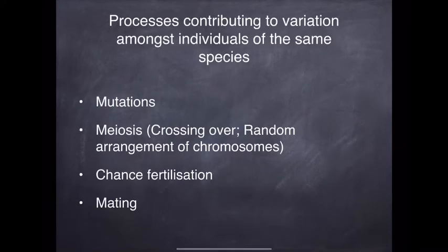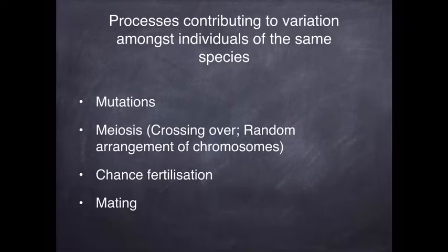If you remember when we did variation and sources of variation — mutations, meiosis, chance fertilization, and random mating — those are our sources of variation. Those sources of variation obviously help when it comes to increasing variation, when it comes to having something that natural selection can act upon, and therefore they are contributing factors to evolution.